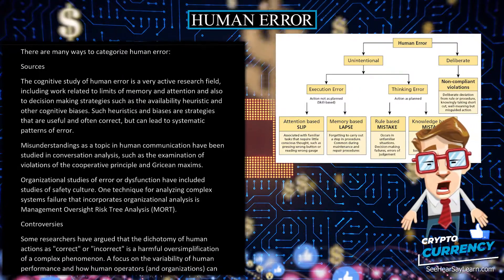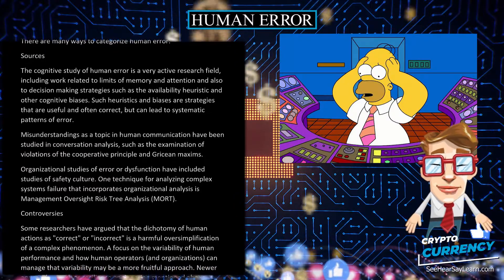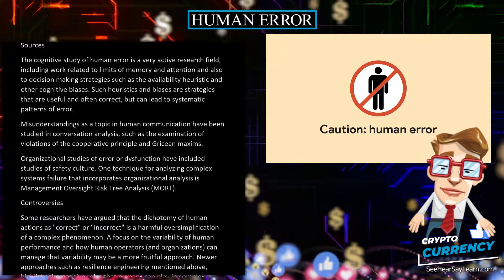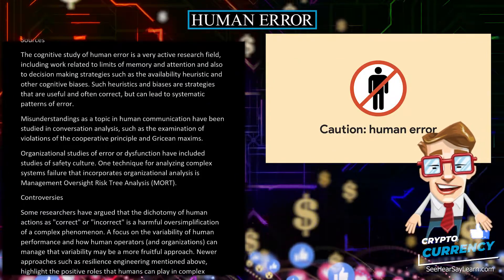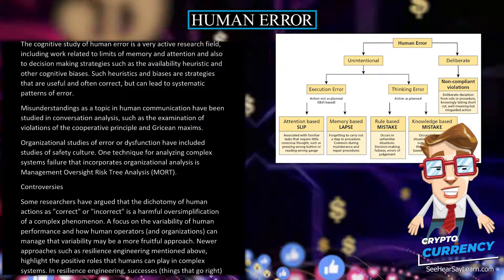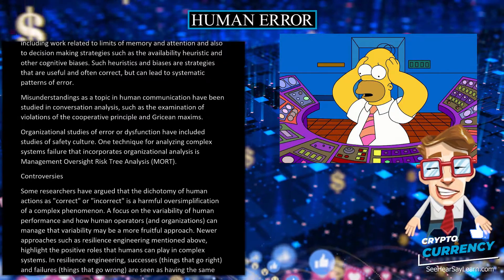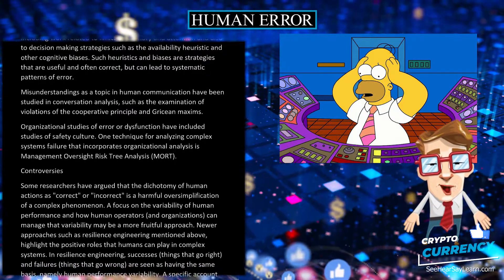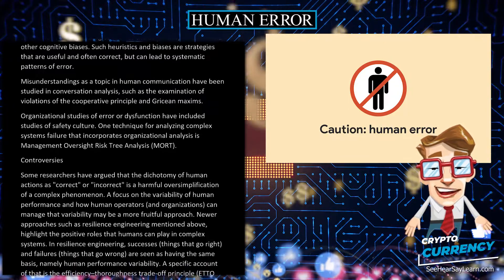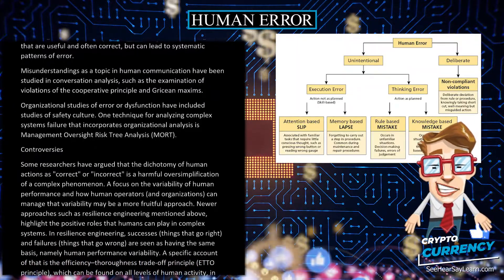Some researchers have argued that the dichotomy of human actions as correct or incorrect is a harmful oversimplification of a complex phenomenon. A focus on the variability of human performance and how human operators and organizations can manage that variability may be a more fruitful approach. Newer approaches such as resilience engineering highlight the positive roles that humans can play in complex systems.